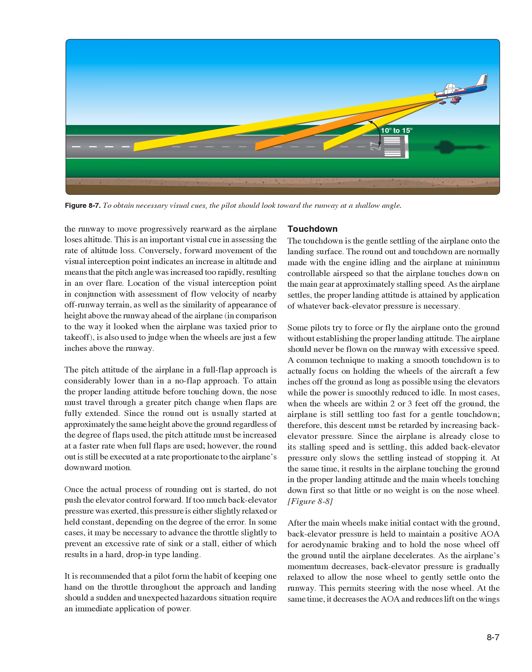The pitch attitude in a full-flap approach is considerably lower than in a no-flap approach. To attain the proper landing attitude before touching down, the nose must travel through a greater pitch change when flaps are fully extended, so the pitch attitude must be increased at a faster rate when full flaps are used. Once the actual process of rounding out is started, do not push the elevator control forward. If too much back elevator pressure was exerted, slightly relax or hold that pressure constant. In some cases, it may be necessary to advance the throttle slightly to prevent an excessive rate of sink or a stall, either of which results in a hard, drop-in type landing. Keep one hand on the throttle throughout the approach and landing in case a sudden hazardous situation requires immediate application of power.